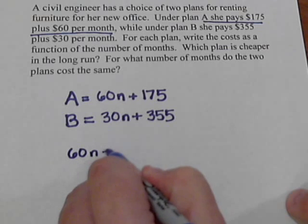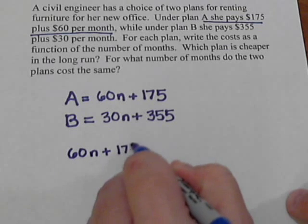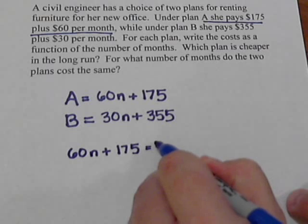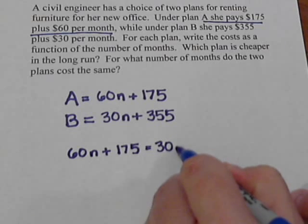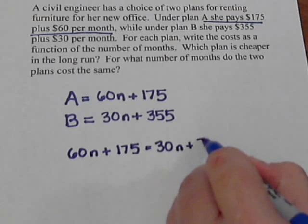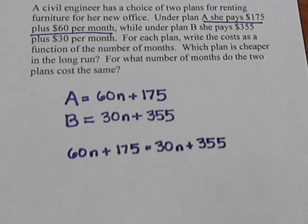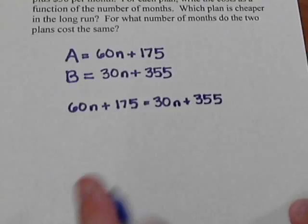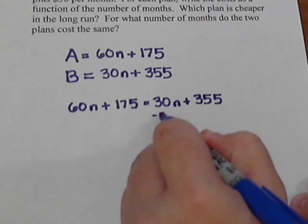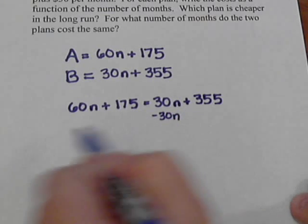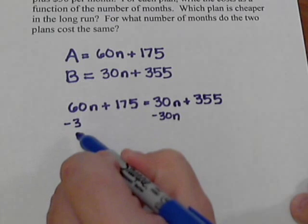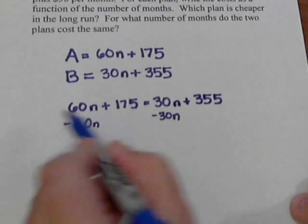So we have 60n + 175 = 30n + 355. And now we're going to solve this for n. So we're gonna subtract 30n from each side.